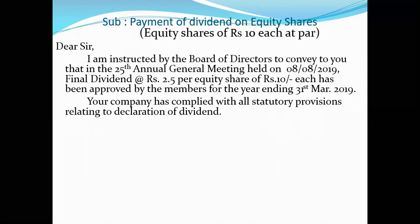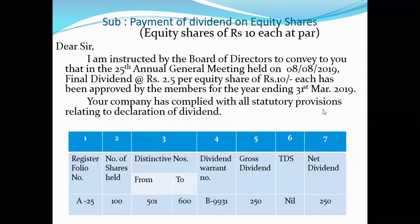If anyone has purchased the shares, then your company has complied with all the statutory provisions. The company wants to issue the dividend. The registered number of shares is 500, and the dividend number is B9931. Gross dividend is 250, because 100 shares multiplied by 2.5 equals 250.